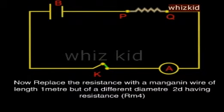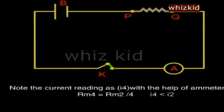Now, replace the resistance with a manganin wire of length 1 meter but of a different diameter 2D. Note the current reading as I4 with the help of ammeter.